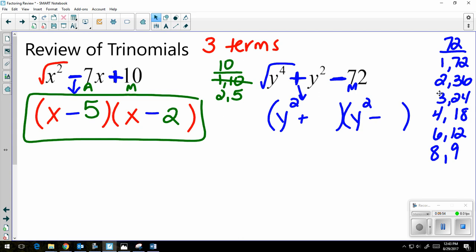So now I want to go through each pairing and see which one is going to give me a 1. Because remember, there's a 1 in front of that y squared. So 1 and 72 combined, add or subtract, will not work. 2 and 36 will not work. 3 and 24 will not work. 4 and 18 won't work. 6 and 12 won't work. 8 and 9 will.